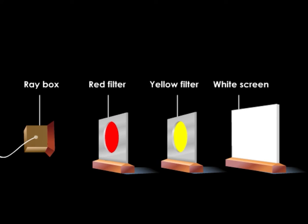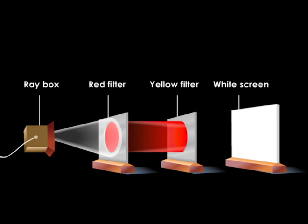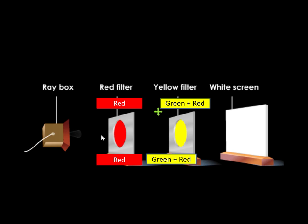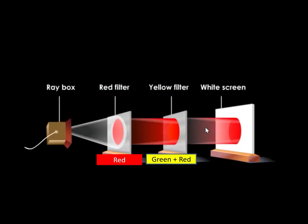What will happen if we replace the red filter with a yellow filter? We could see red color appear on the screen. The red filter allows red light to pass through it. This is because the yellow filter is a mixture of green and red color. Therefore, what you can see is red color appear on the screen.